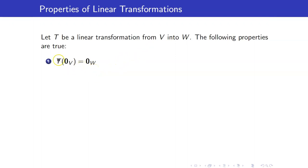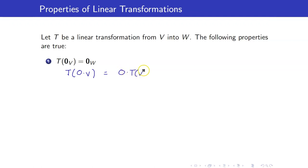Why is this true? Note that the zero vector is just zero times a fixed vector V. However, zero here is just a scalar, so therefore this is zero times T of V. But remember that the zero scalar times any vector is always equal to the zero vector. So this is the zero vector in W. That proves the first property.